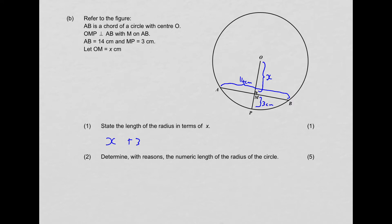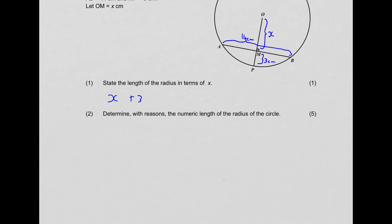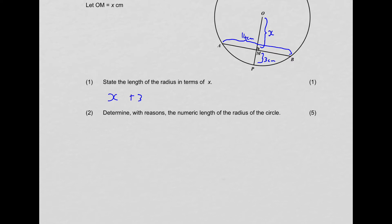Question two: determine with reasons the numeric length of the radius of the circle. Numeric means your answer can't have X's in it — it has to be an absolute value. We can already see a triangle forming. We know this distance is X, and this distance is 7, because from theorem 1, if a line from the center cuts a chord at a right angle, then it bisects that chord. So because AB is 14, AM must equal 7.